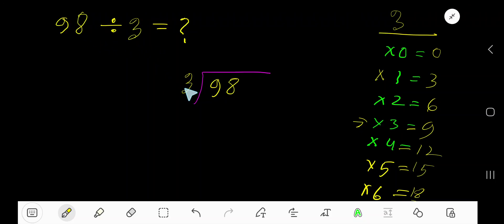98 divided by 3. Here 3 is a divisor, so we need the multiplication table of 3. 3 times 0 is 0, 3 times 1 is 3, 3 times 2 is 6, 3 times 3 is 9. To find the multiplication table of 3, just add 3 with the previous step: 0 plus 3 is 3, 3 plus 3 is 6, 6 plus 3 is 9.